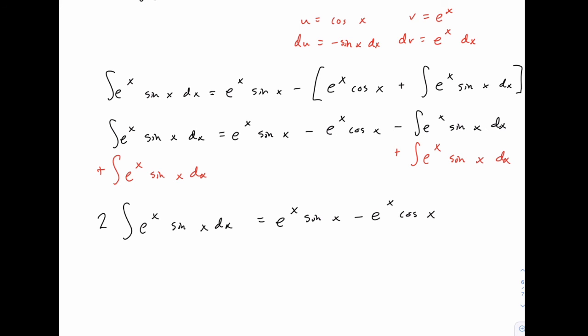And then to solve for this, we just divide both sides by two. So the answer to our question is one-half e to the x sine of x minus one-half e to the x cosine of x. And of course we need a plus c just to be consistent.